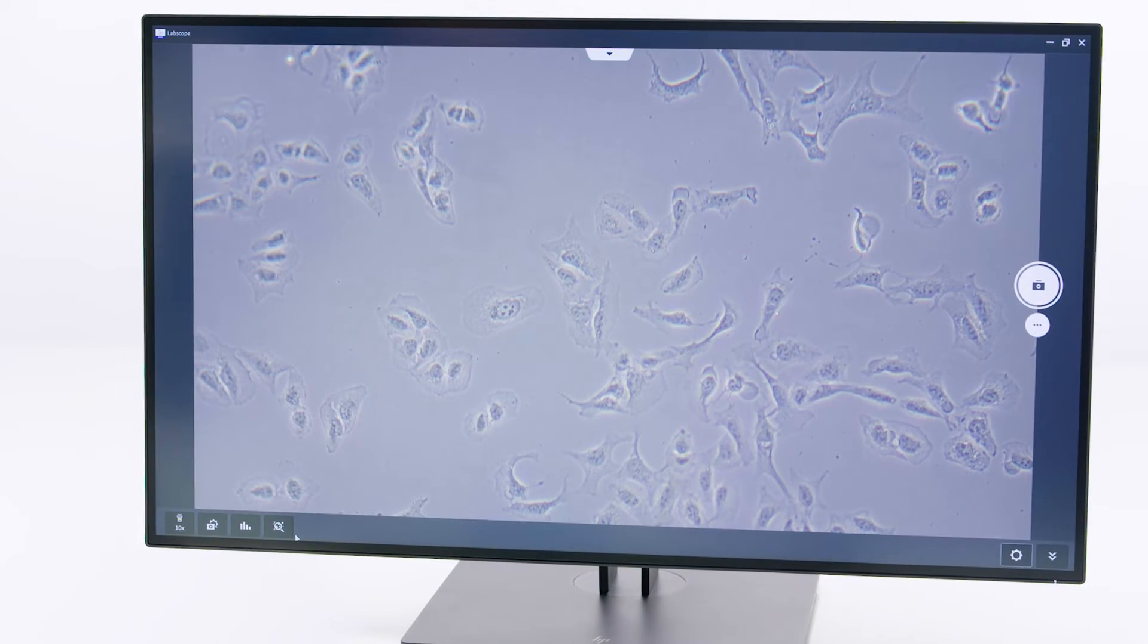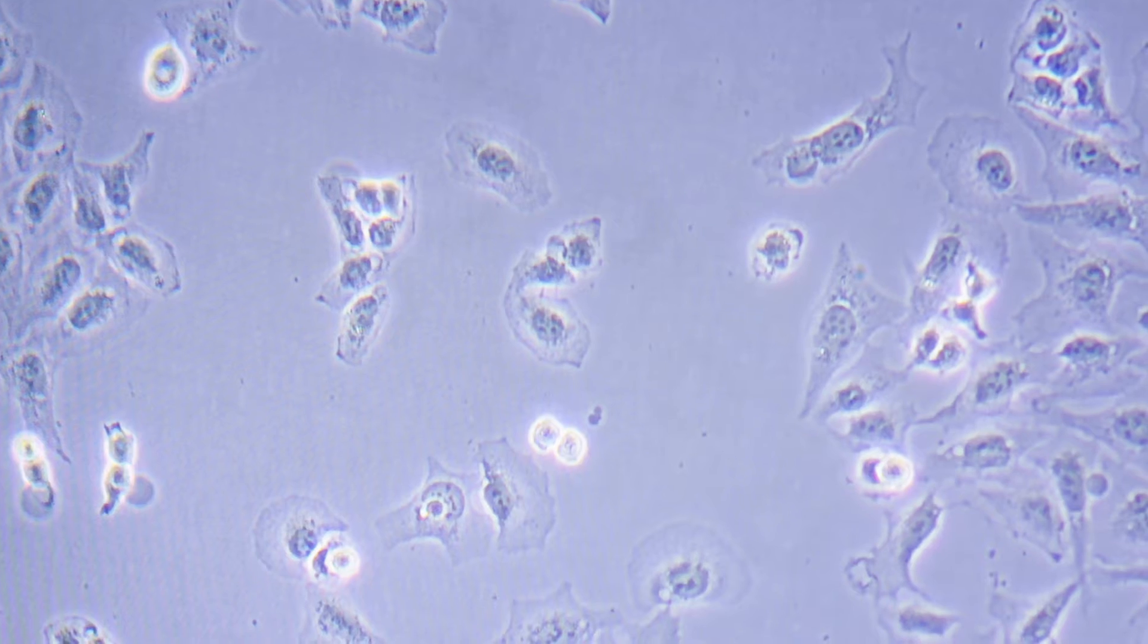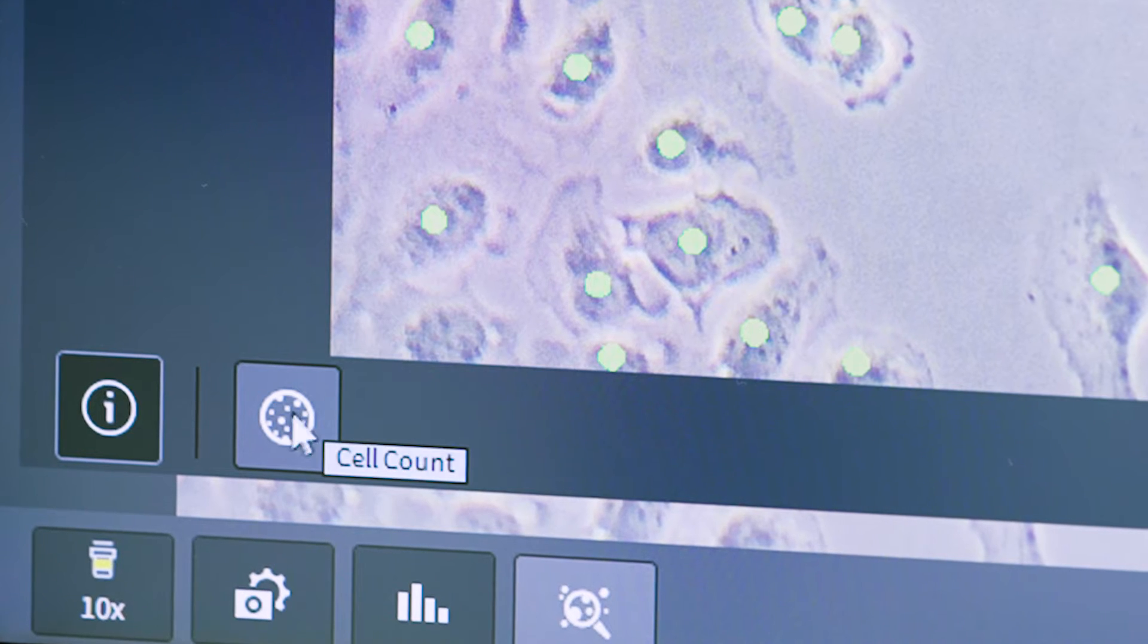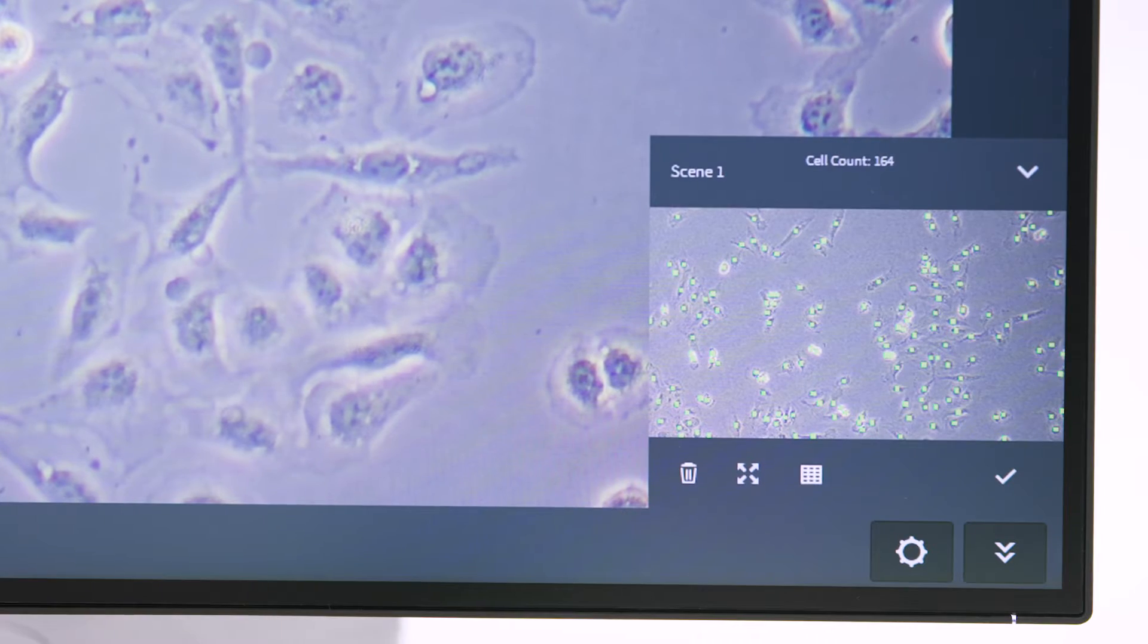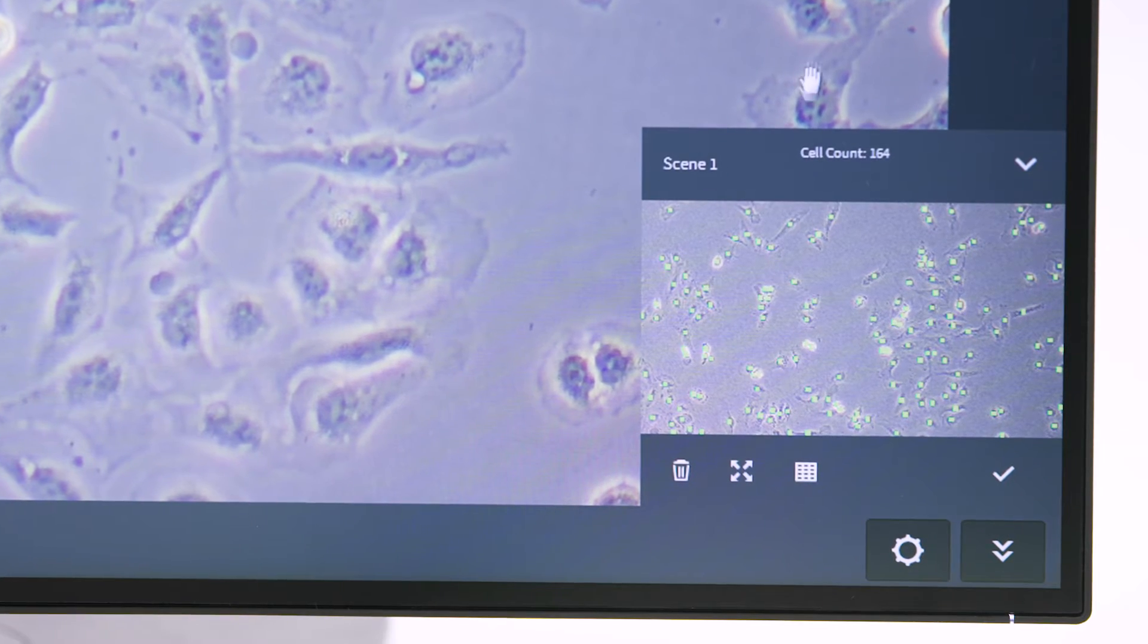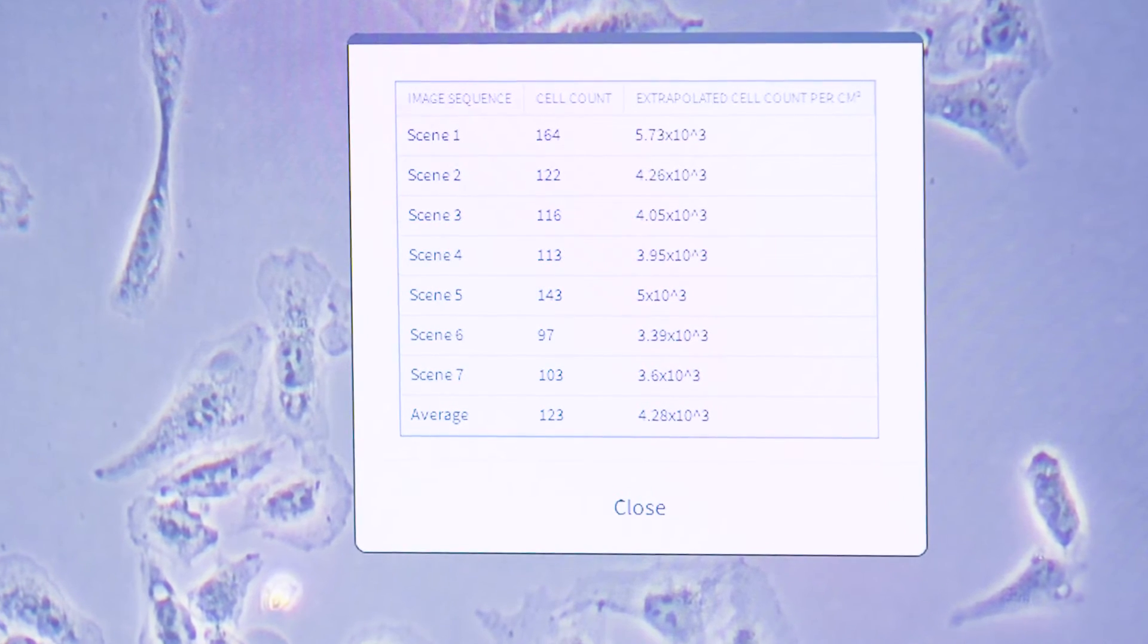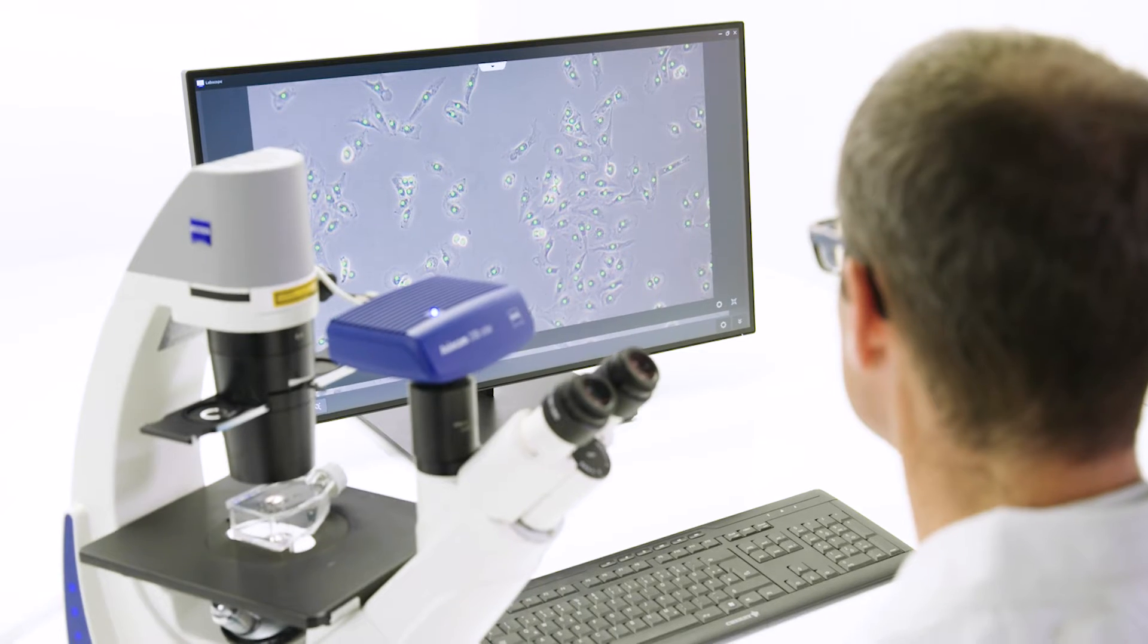Manually done, this can be a rather time-consuming, labor-intensive process with error-prone subjective results. Opt for the Zeiss LabScope AI cell counting module and start to improve the quality of your cell culture today. Make your experiments more reproducible.